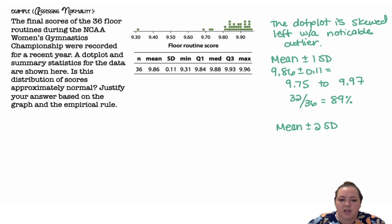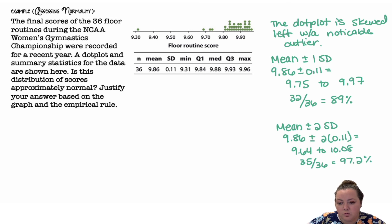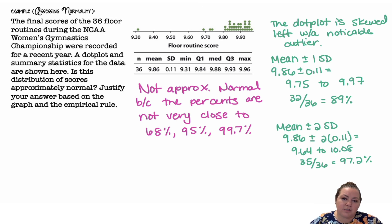Checking again for two standard deviations: the mean plus or minus two standard deviations gives 9.64 to 10.08, which captures 35 out of 36, or 97.2%, getting closer to 95% but still not super close. So we would say this is not approximately normal because the percents are not very close to the 68, 95, 99.7 that we would expect in a normal distribution.